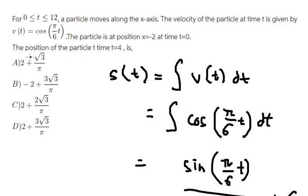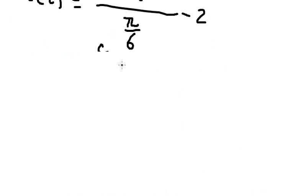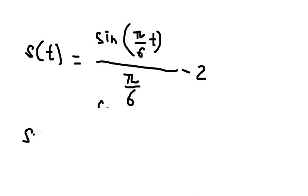Now on the question, we need to find the position of the particle at time t equals 4. So we put S(4) in here. So we calculate this one. And we have 3 with the square root of 3 over π minus 2.